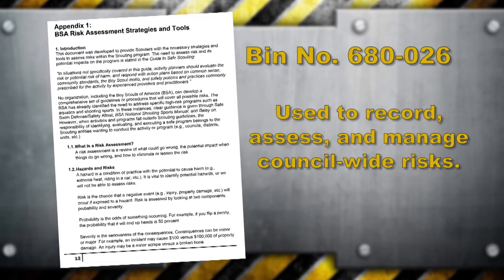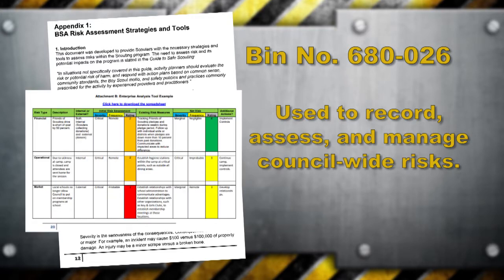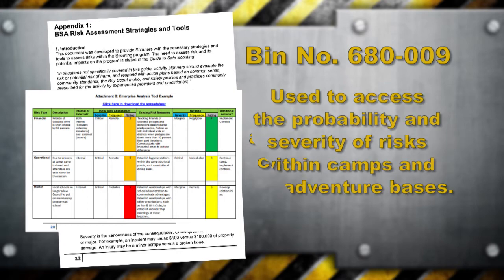The enterprise analysis tool on the BSA Health and Safety website is primarily used to record, assess, and manage council-wide risks. The risks identified using this tool should be serious enough to jeopardize council operations, and covers many areas such as financial, legal, or liability risks.